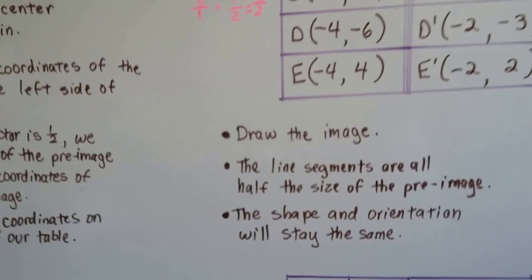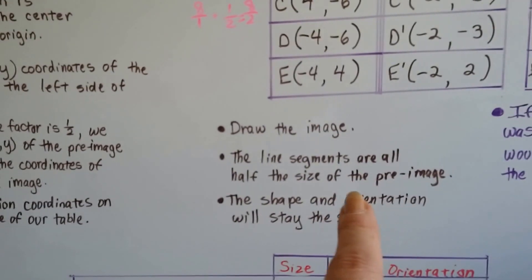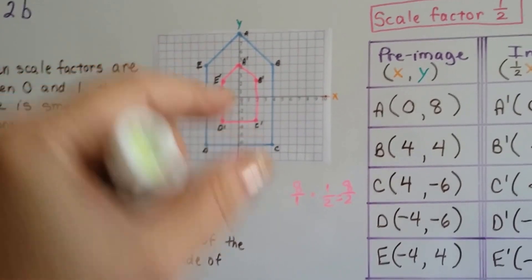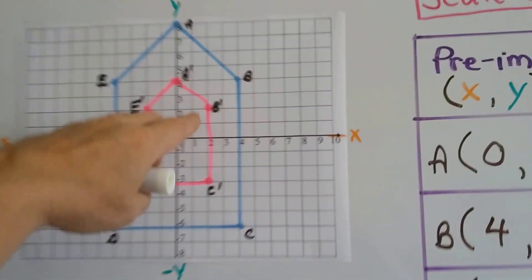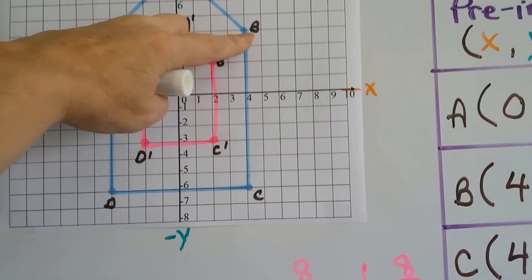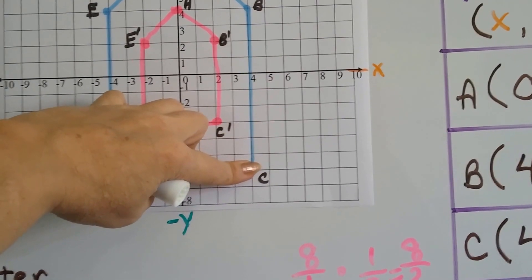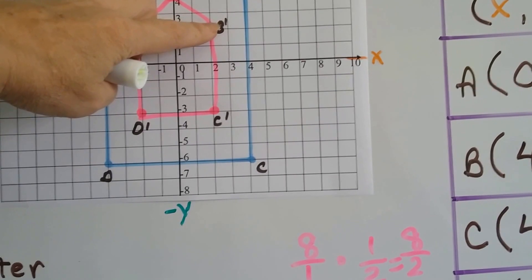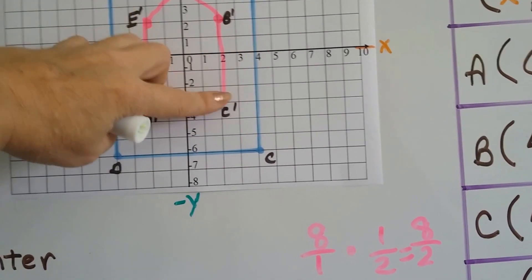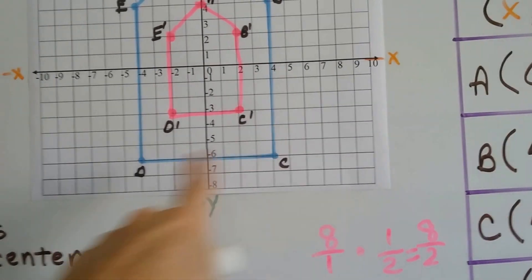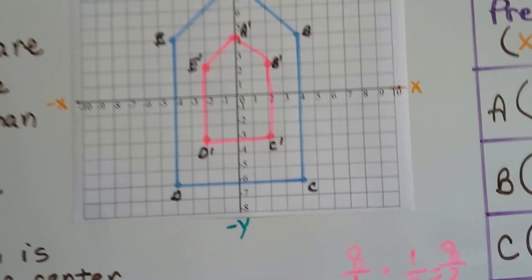The line segments are all half the size of the pre-image. The shape and orientation are the same. It's just the lines are half. So if we look at the length of BC, this is 1, 2, 3, 4, 5, 6, 7, 8, 9, 10 units. B prime, C prime is 1, 2, 3, 4, 5 units. See? Every line is half the length of the blue one.